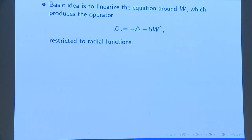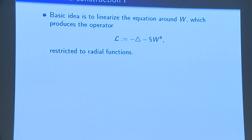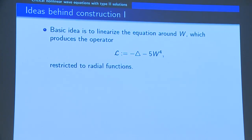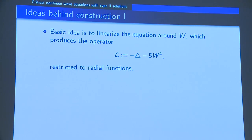What was the idea behind this construction? You linearize around W. If you forget for now about the modulation, you obtain the elliptic operator: minus Laplace minus 5W^4. You can study its spectrum.